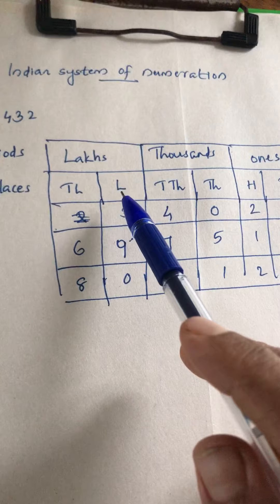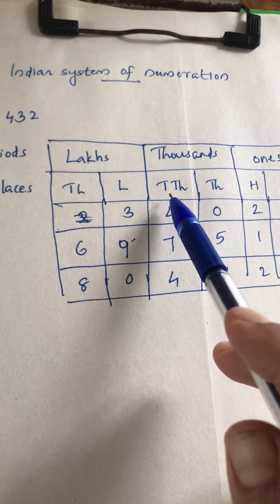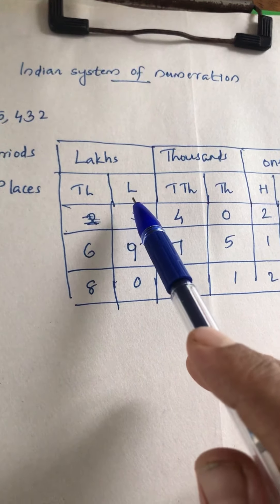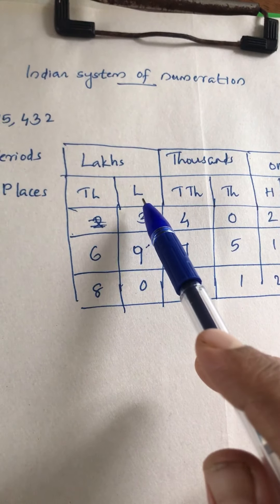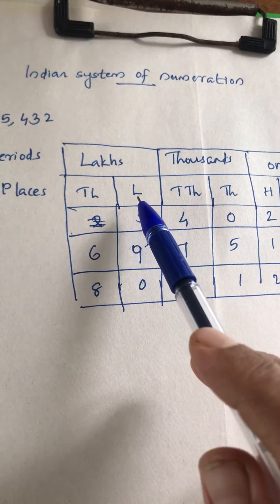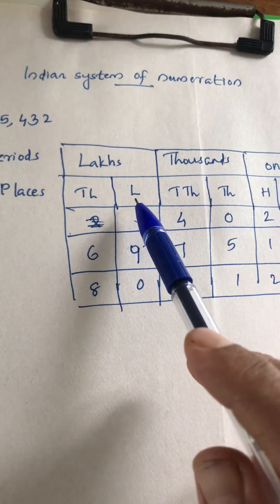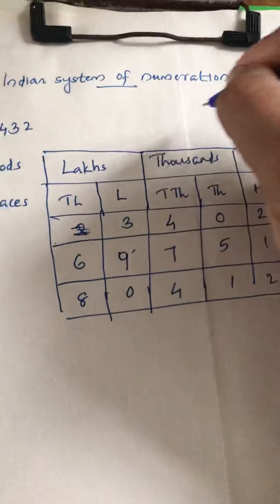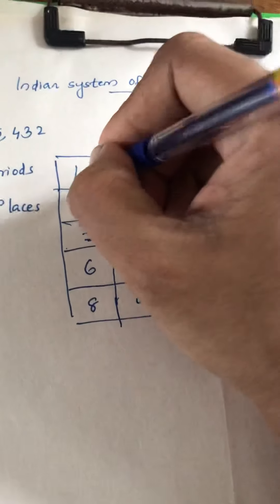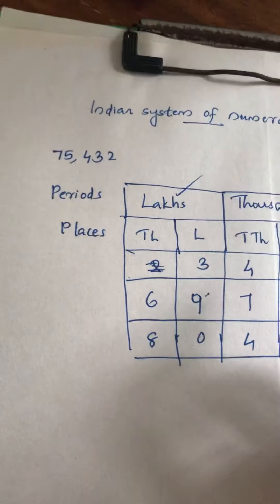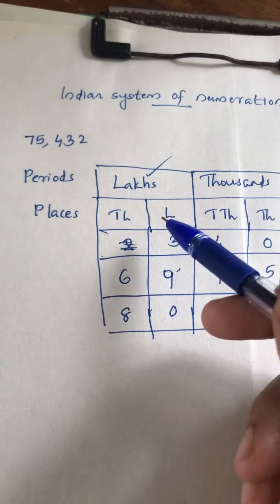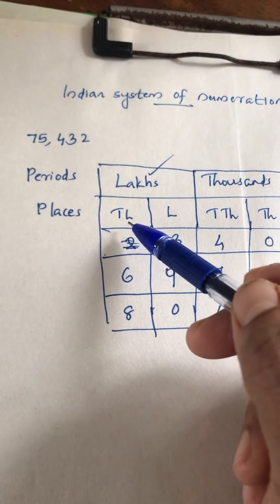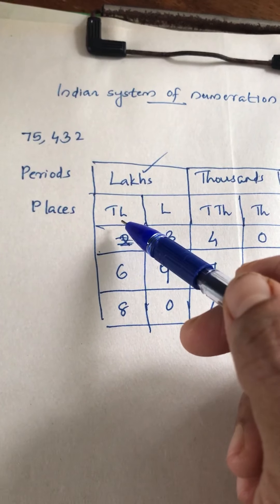But after the ten thousands place, here in the Indian system, instead of hundred thousands, it is called lakhs. After lakhs, the next place is ten lakhs.